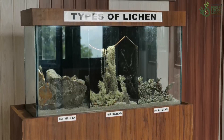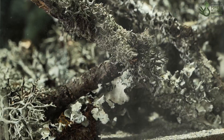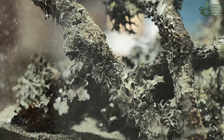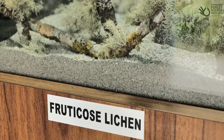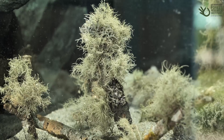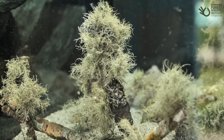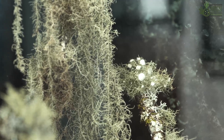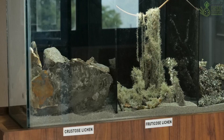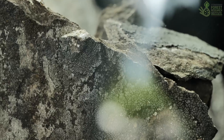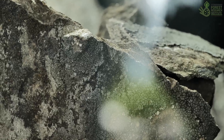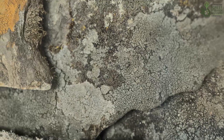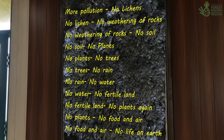Found in various colors, sizes, and forms, lichens are commonly divided into foliose lichens, fruticose lichens, and crustose lichens. Foliose lichens have flat leaf-like structures, whereas fruticose lichens have leafless branch-like structures. Crustose lichens grow on surfaces forming a crust over them. They come in vibrant colors.